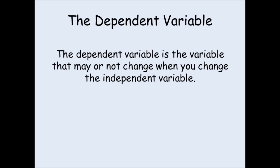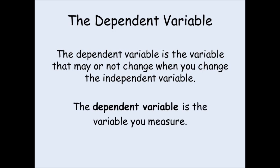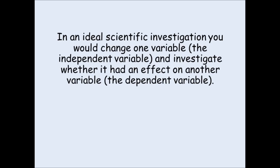The dependent variable is the variable that may or may not change when you change the independent variable. The dependent variable is the variable you measure. You want to be able to say that any change in the dependent variable — the one you've measured — is caused by the changes you have made to the independent variable.